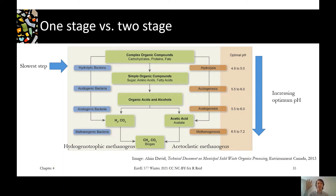Tackling these big complex molecules is really difficult, and it's important to try and speed up this slowest step where possible. That's why a two-stage system can be useful, because you'll notice that the hydrolysis step operates best at a different pH than the other steps.